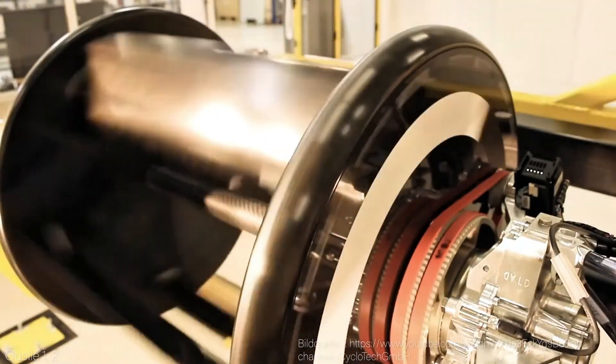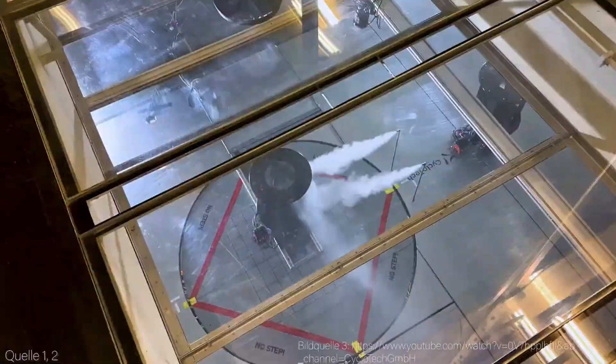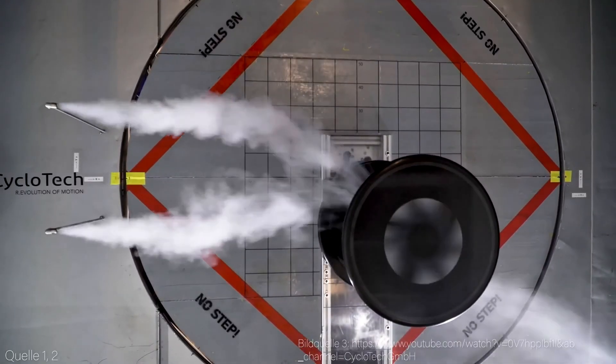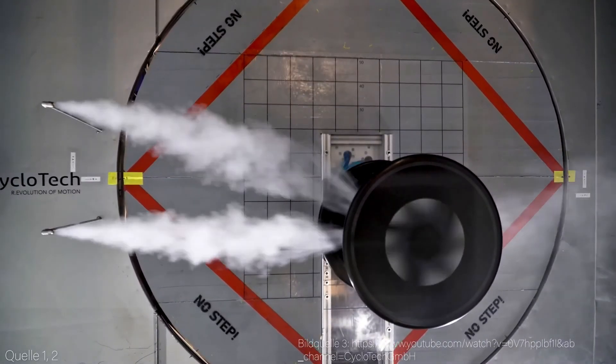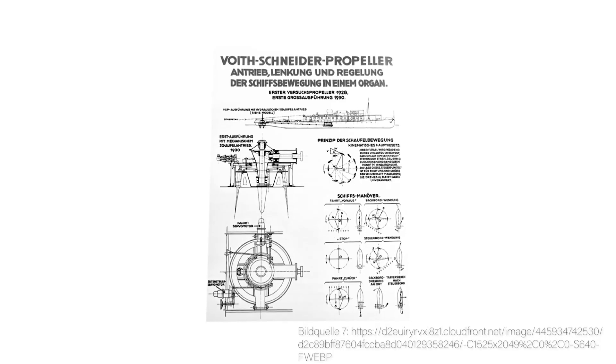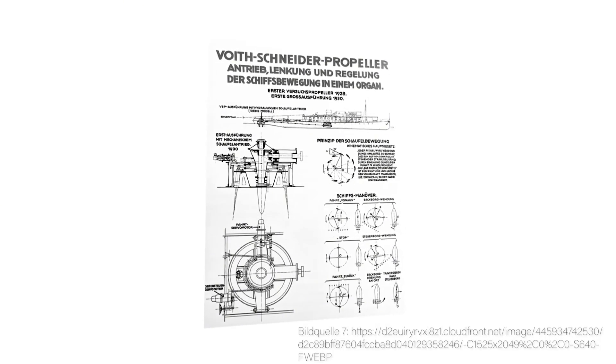Have you ever heard of a propeller that lies on its side and spins like a paddle wheel? Believe it or not, cycloidal propellers, sometimes called cyclorotors or Voith-Schneider propellers, have been around for over a century, and their story is full of wild ingenuity.